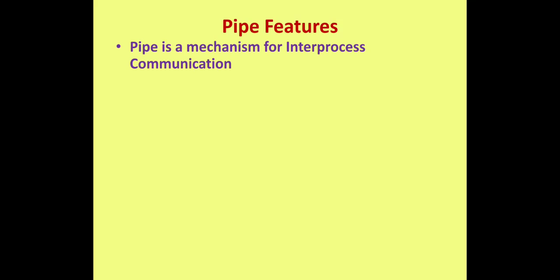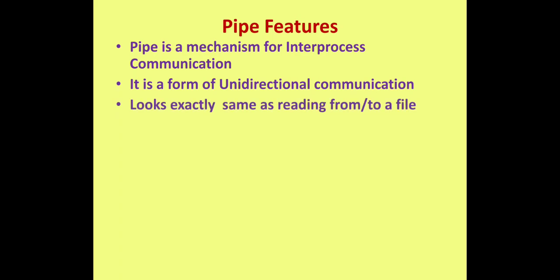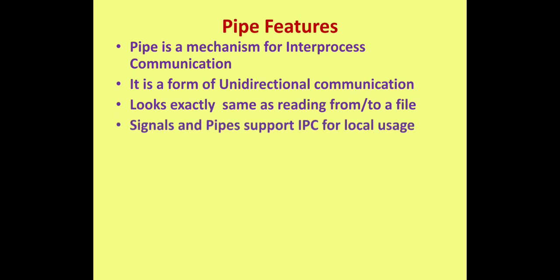Pipe is a mechanism for IPC. It is a form of unidirectional communication — a sender process sends information at the write end of the pipe and the receiver receives this information from its read end. It looks exactly the same as reading from or writing to a file. Signals and pipes support IPC for local usage. If we want communication between processes on different machines, we may have to use sockets.